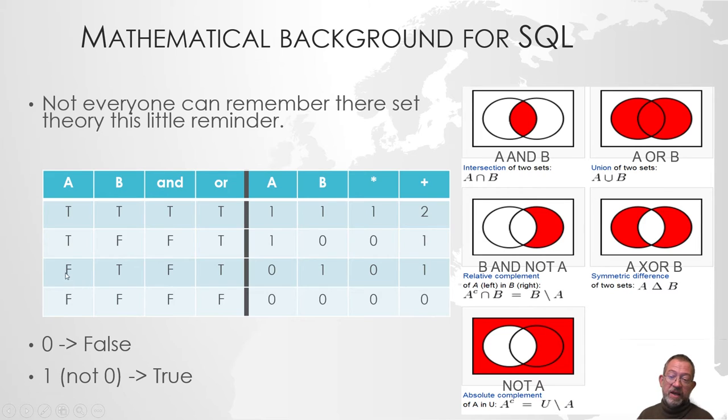And a false and a true the other way around gives the same results. The two falses will give a false in both situations.